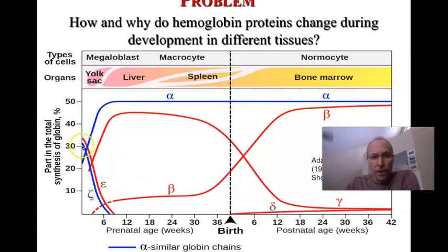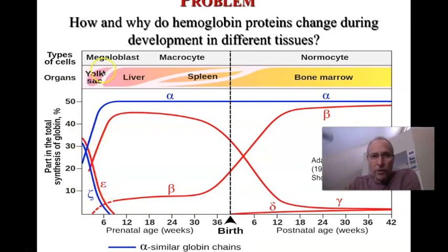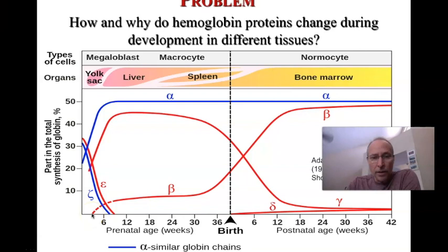There are other interesting chains. There's zeta — that's the lowercase Greek letter zeta — and another one, epsilon, expressed primarily in the embryonic yolk sac. As the yolk sac disappears, these two globin proteins also disappear. At the time when they're disappearing, another protein starts to be expressed — beta.